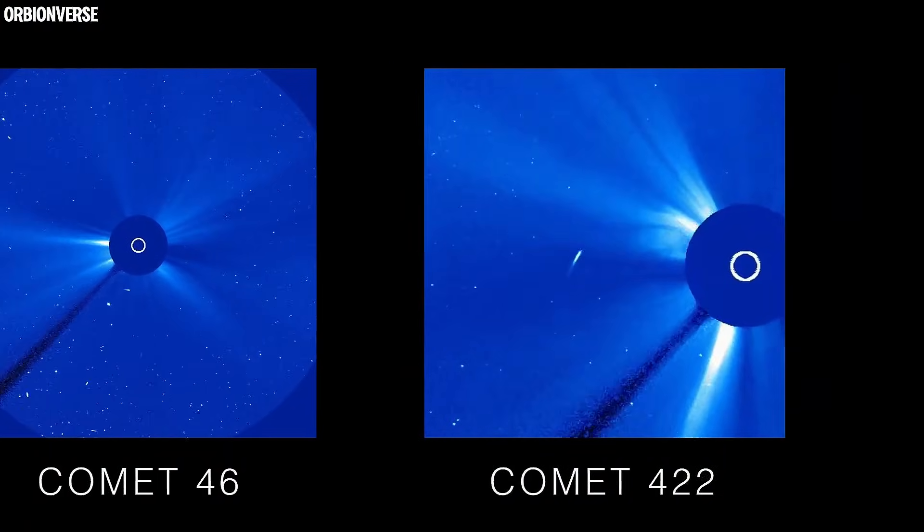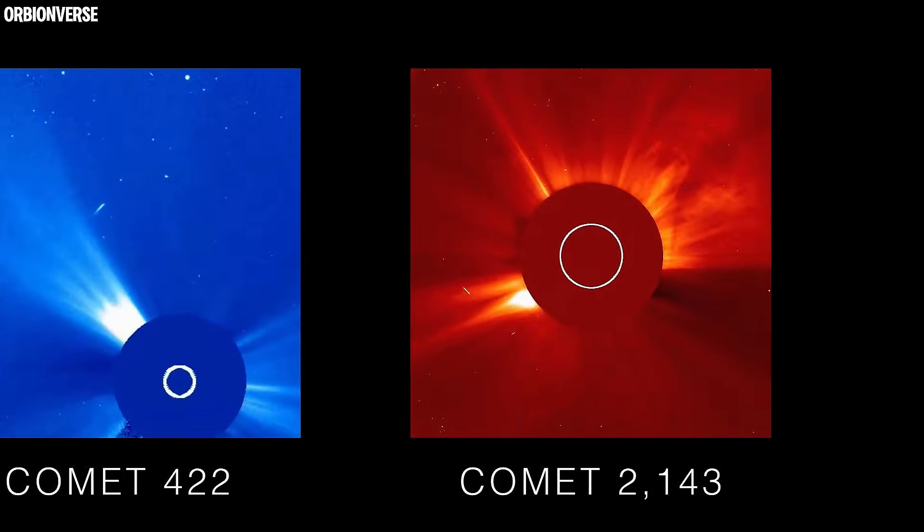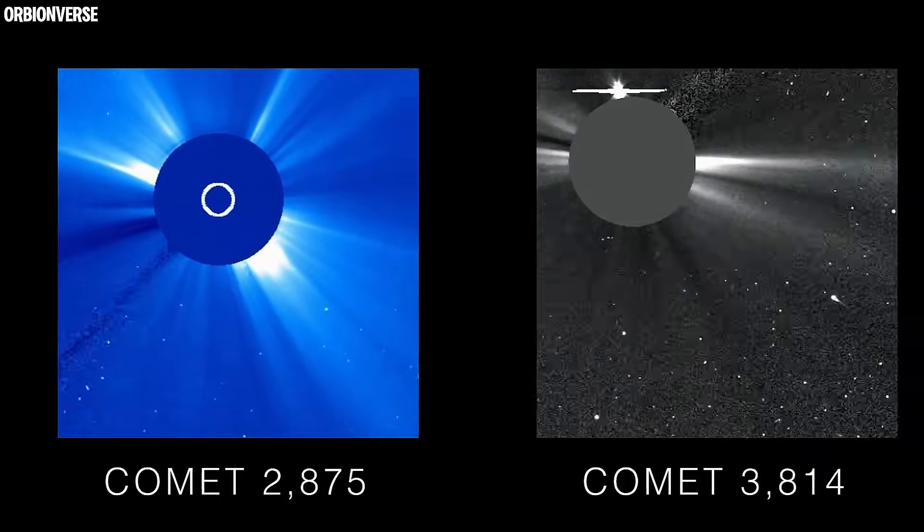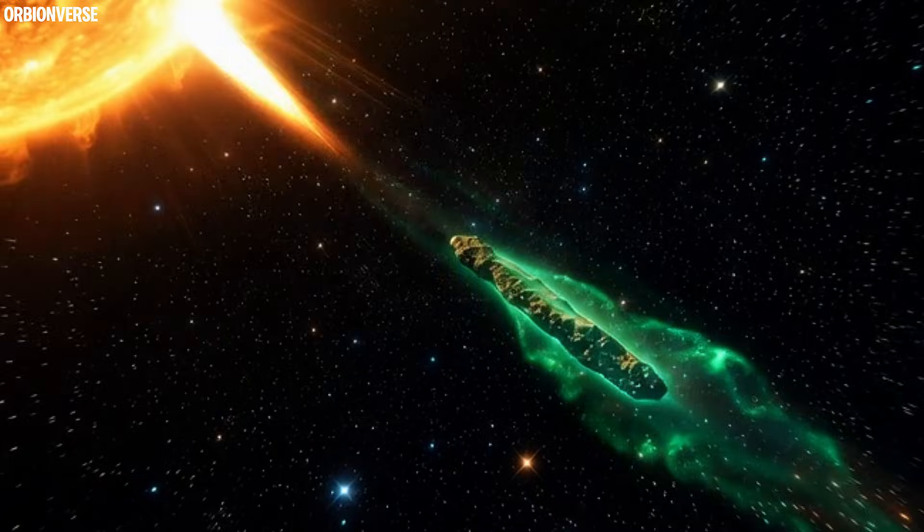When a comet gets close to the sun, it usually forms a tail. Dust burns off, ice vaporizes, a long shining trail appears behind it.